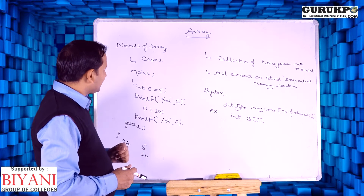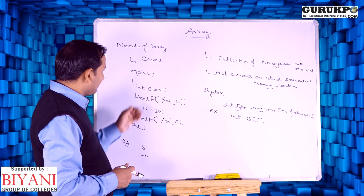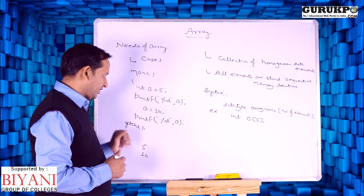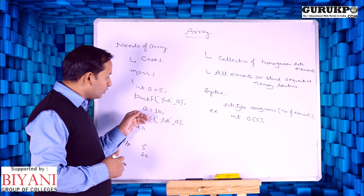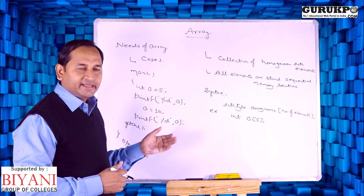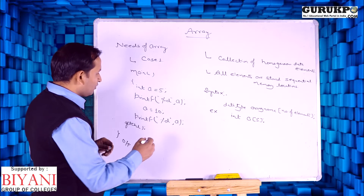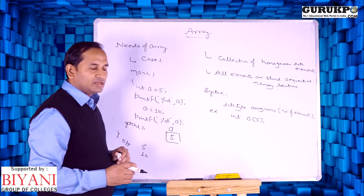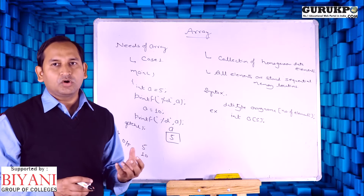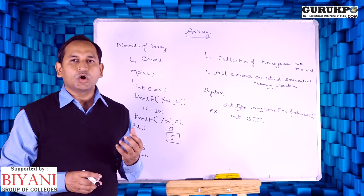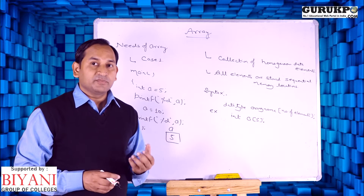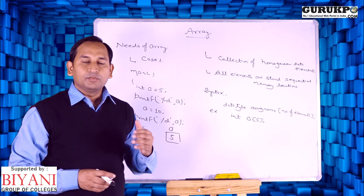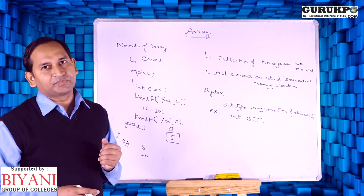In this simple example, we have one variable 'a' whose value is 5. If we print the value it will display 5. When we store another value, 10 will be stored inside 'a' and it will display 10. So each time there is one value corresponding to a variable. In other words, an ordinary variable can store only one value at a time. This is the major drawback of ordinary variables. If we need to store more than one value at a time, we will use arrays.